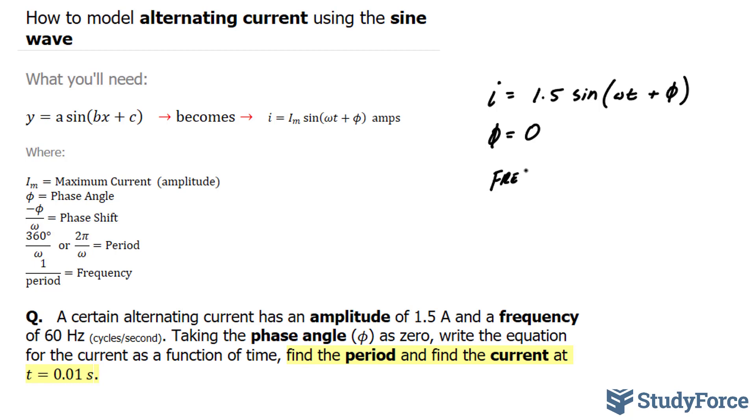Frequency is equal to 1 over the period. The frequency we're told is 60, 60 cycles per second, and that's equal to 1 over the period. Therefore, our period is equal to 1 over 60. And the way I found that is I isolated for period. Multiply both sides by period and then divide both sides by 60.